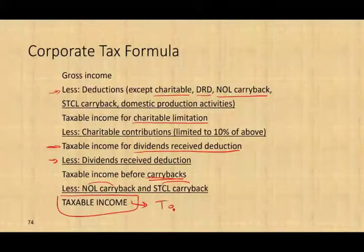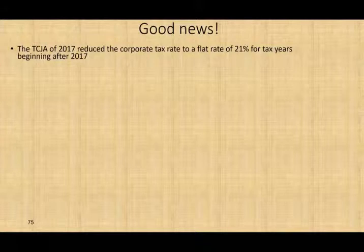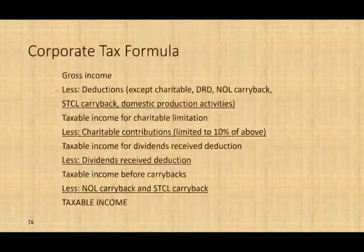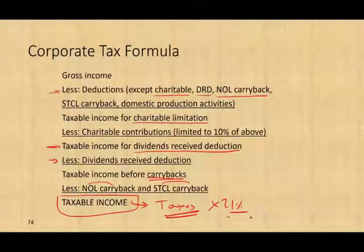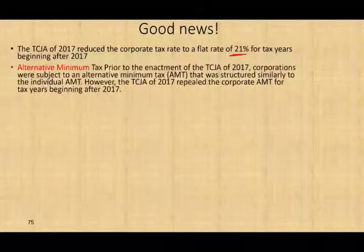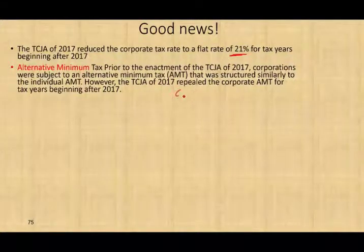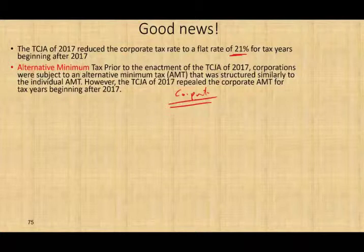Now we compute our taxes. The good news is that under the Tax Cuts and Jobs Act, the corporate tax rate is a flat 21%. Simply multiply your taxable income by 21%. Also, there is no longer an alternative minimum tax for corporations — it existed prior to the Tax Cuts and Jobs Act, but for corporate clients it has been repealed. It's gone.